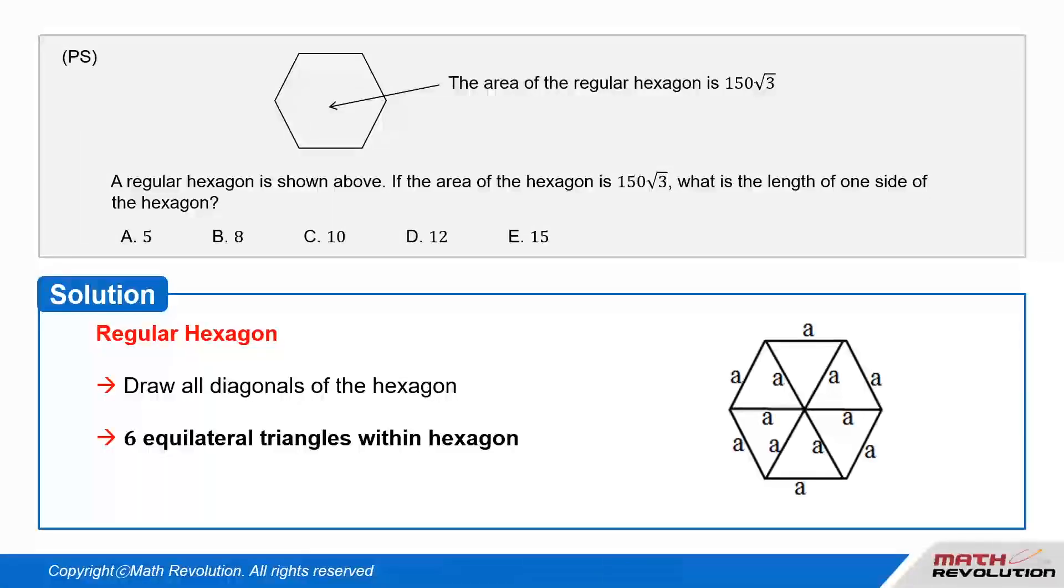Solution. The figure below shows a regular hexagon. Let's draw all diagonals of the hexagon. We end up with six equilateral triangles within the hexagon.